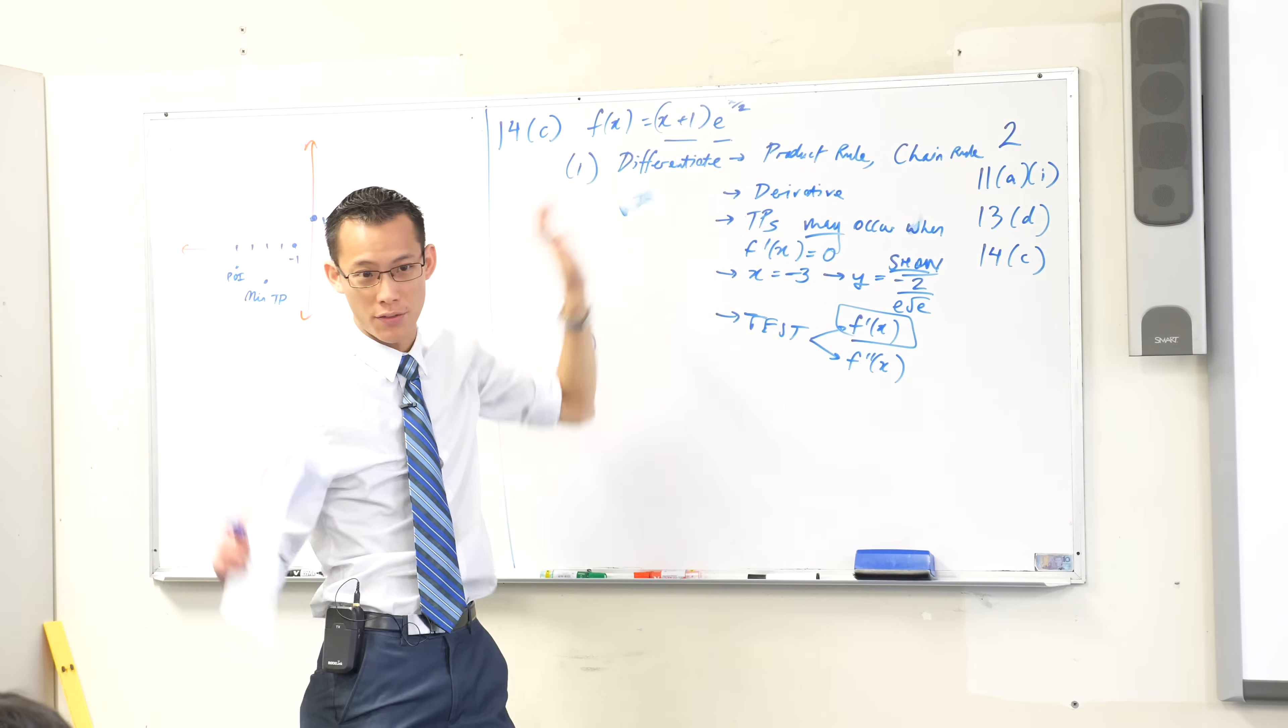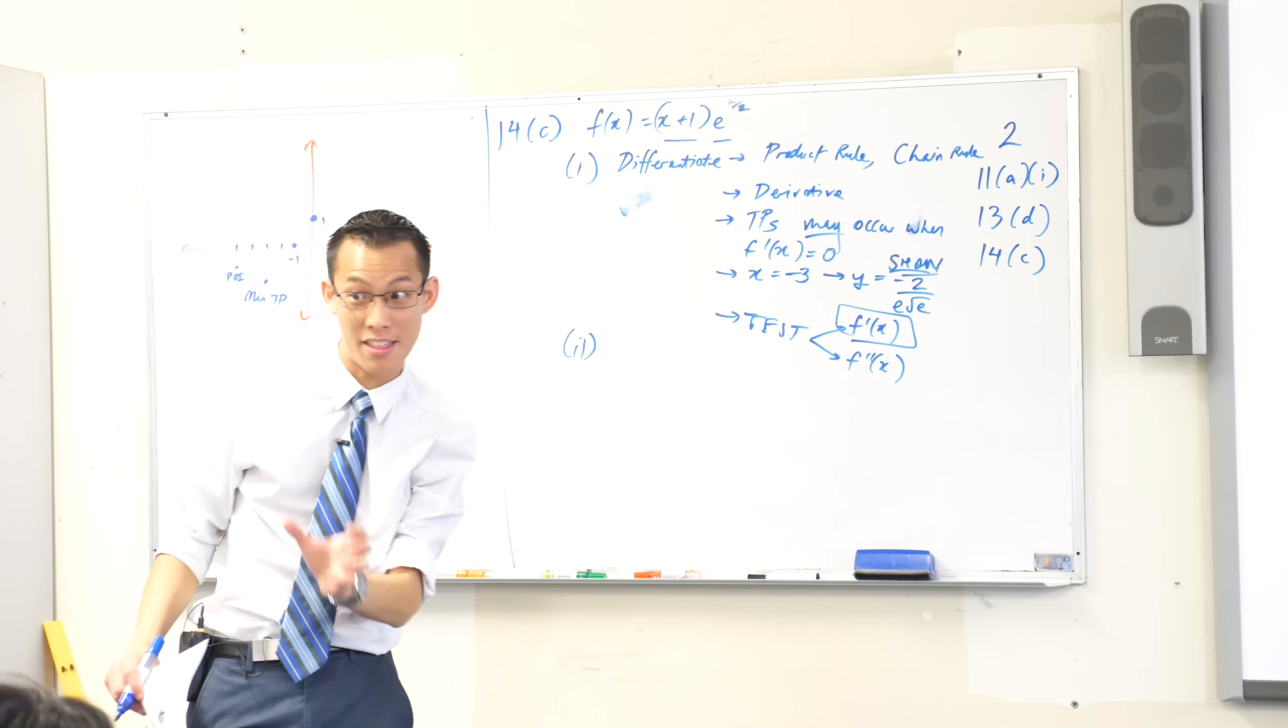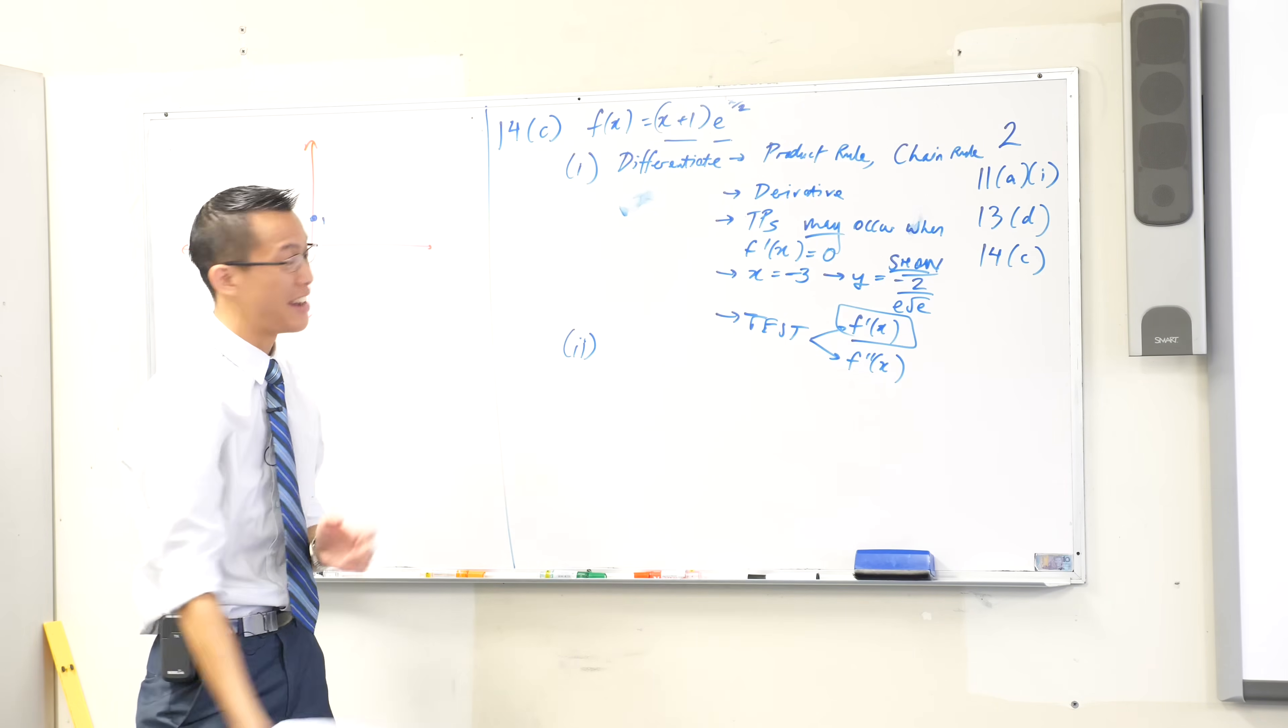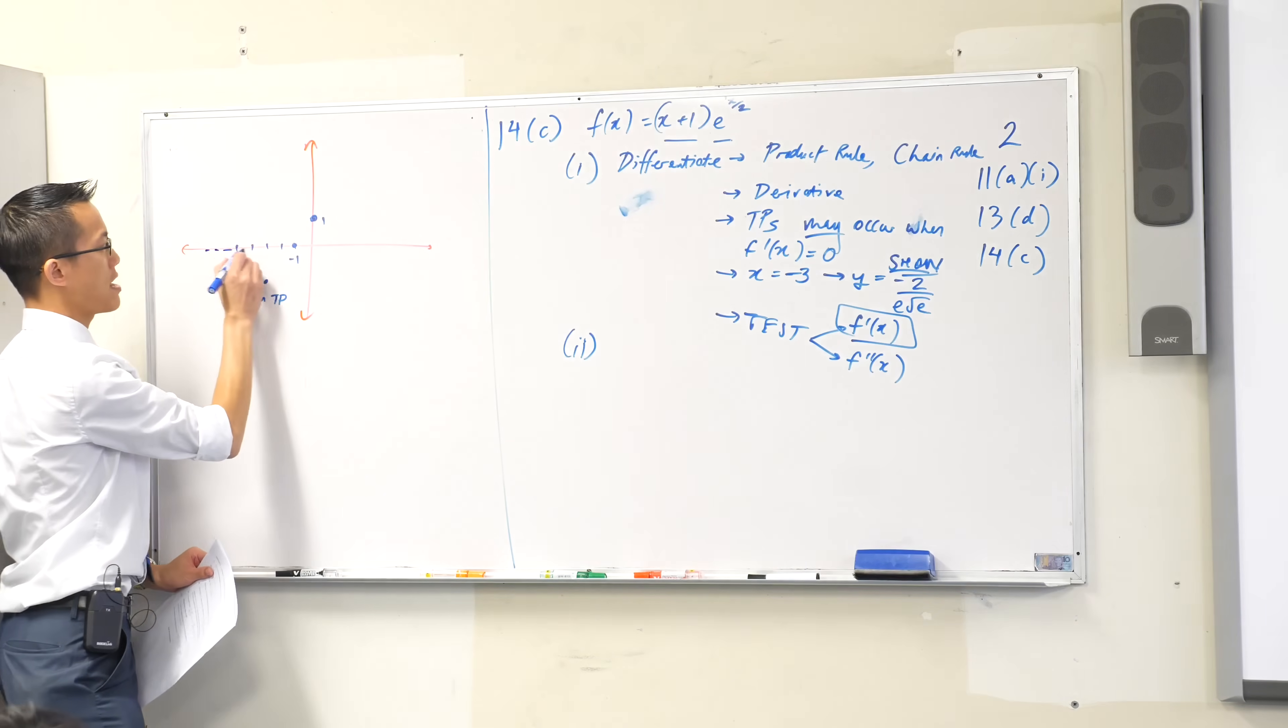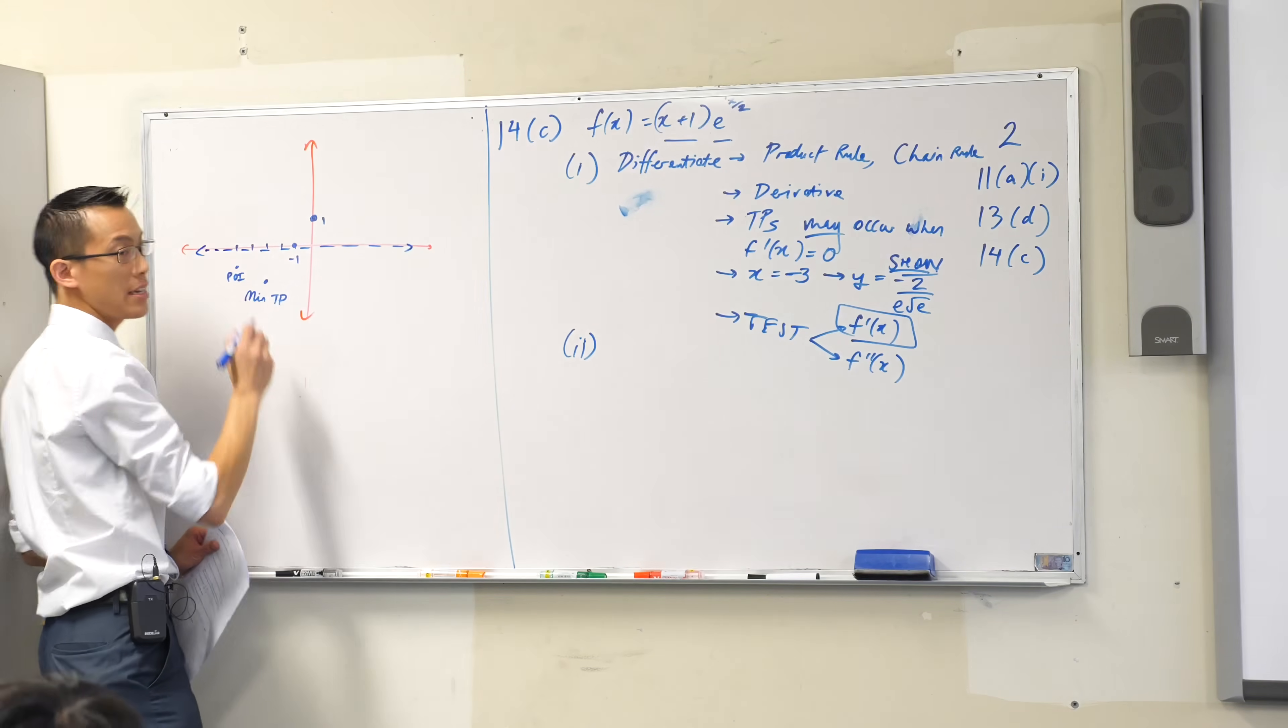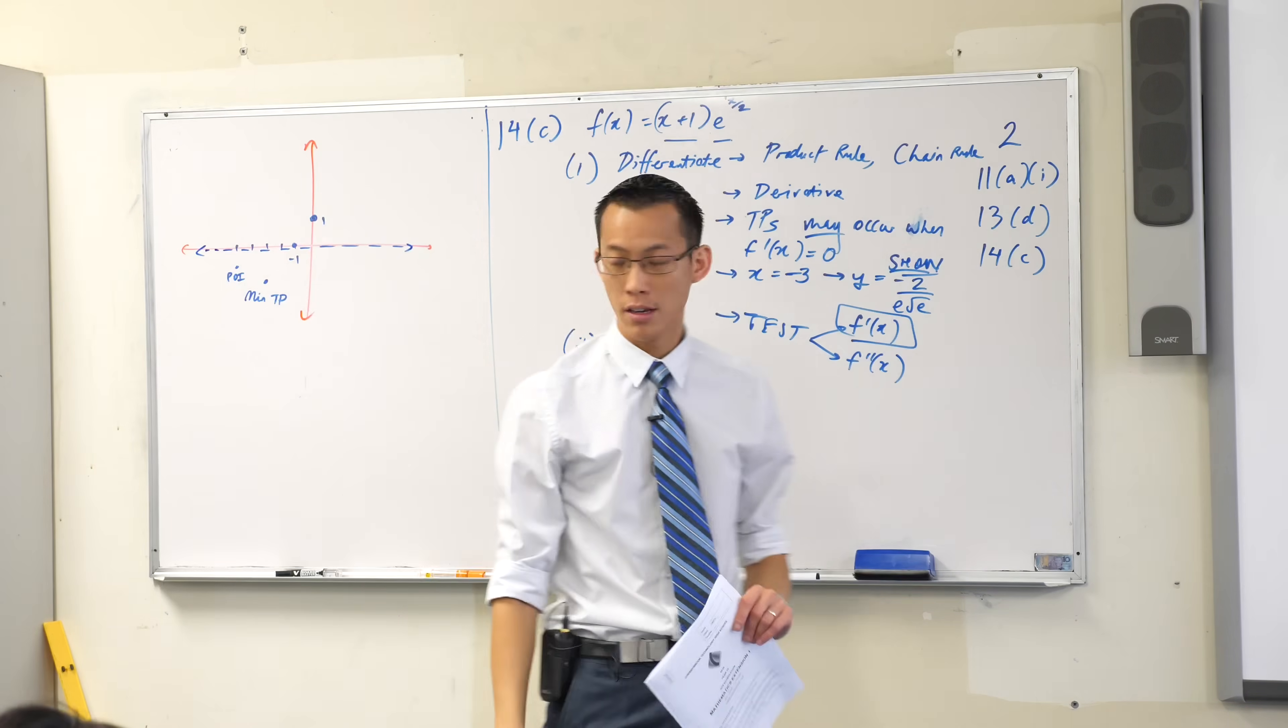The exponential is going to take over. And another way you can test this, if your intuition is not enough, is you've got a calculator there. Right? Just throw a value in. Negative 100. Negative 1000. Convince yourself that y equals zero is going to be your horizontal asymptote.